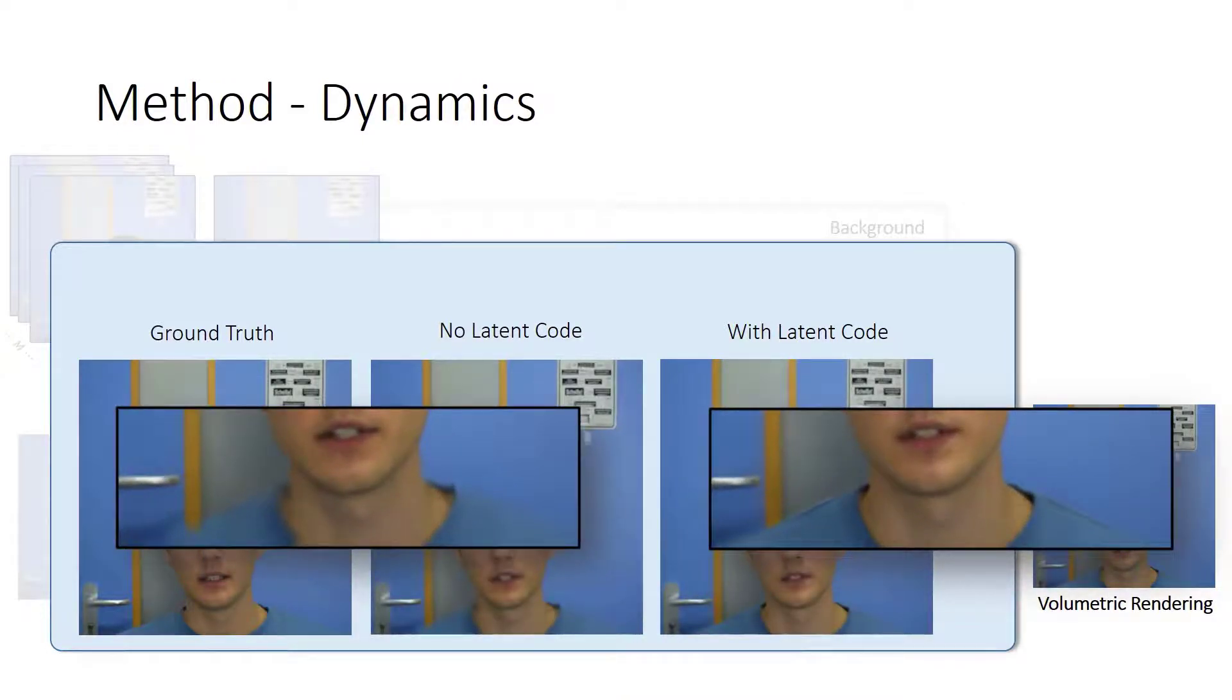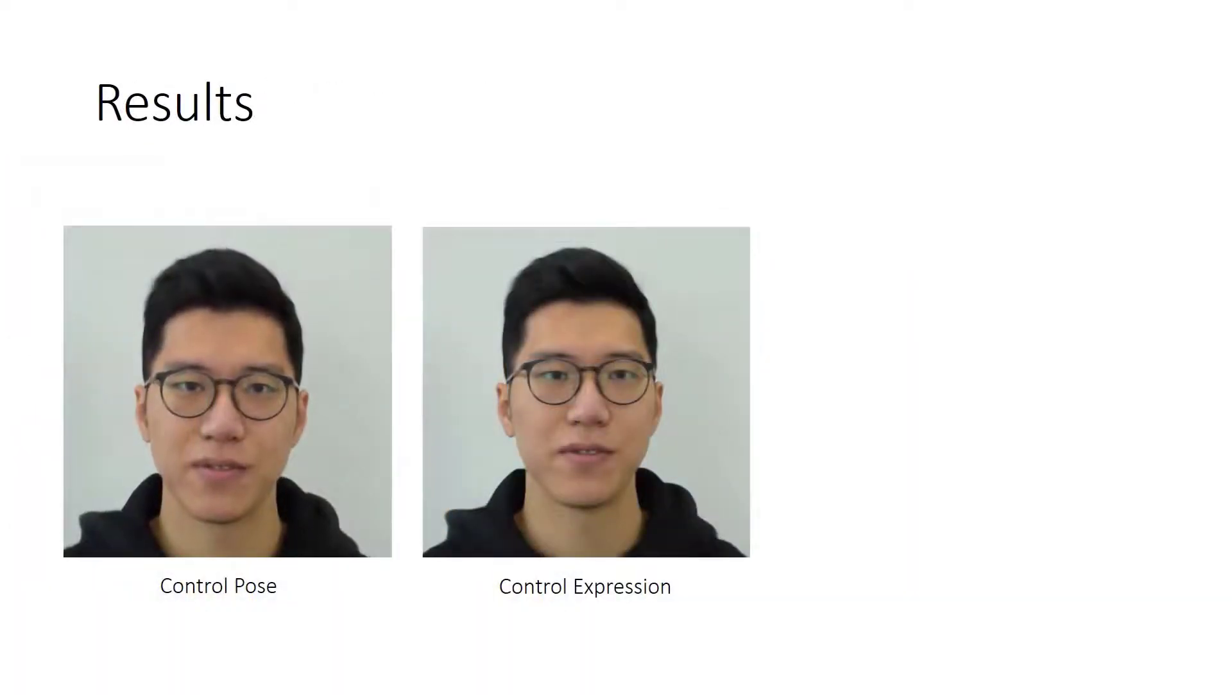Our approach is able to reconstruct an implicit 4D representation of a talking human head with semantically meaningful handles for pose and expression. Our dynamic radiance field is able to learn the volumetric deformations and the surface that corresponds to each facial expression.